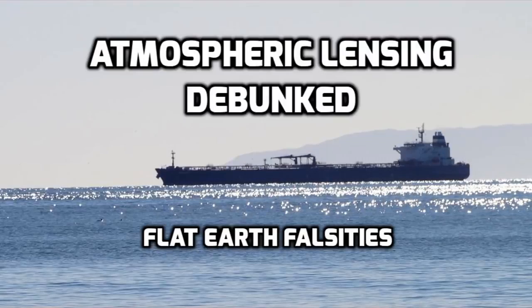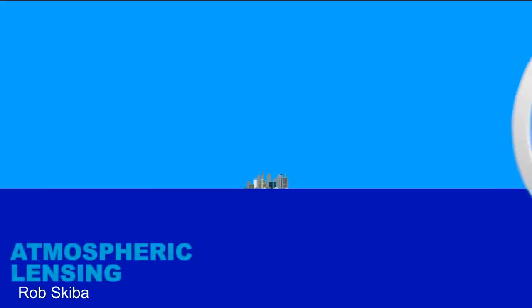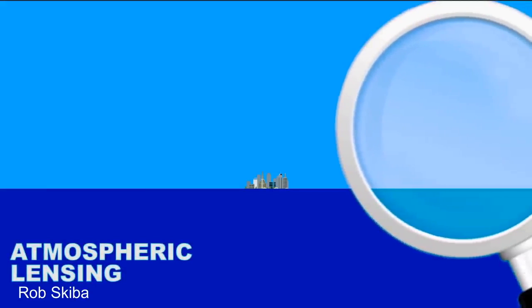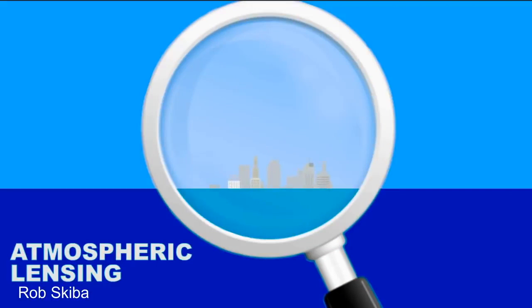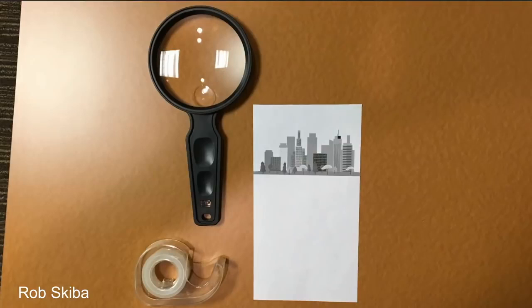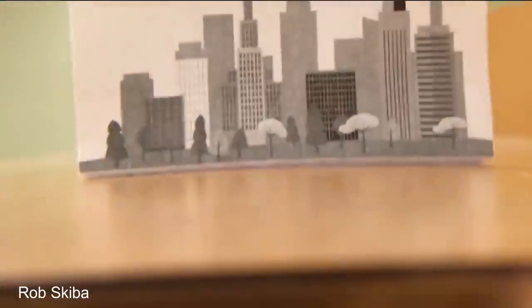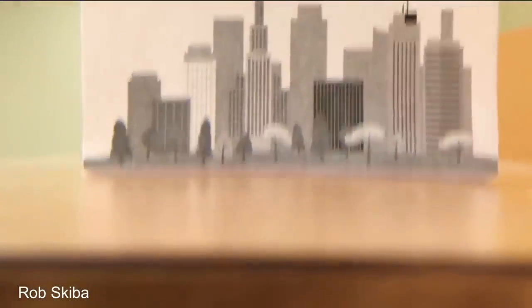Many flat earthers try to use what they call atmospheric lensing to explain why boats or buildings appear hidden at the bottom by the horizon. This was popularized in a few videos by Rob Skiba in which he did a few experiments with a magnifying glass and an image of a distant city which appear to explain how a city can appear hidden at the bottom on a flat earth. But, as always, there are flaws in his experiments and in his reasoning, as others have pointed out.